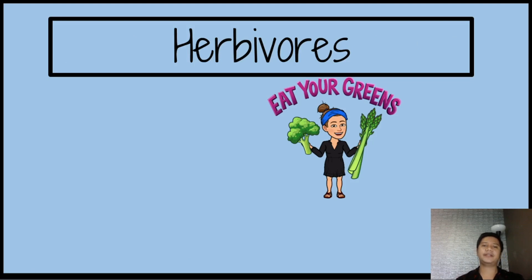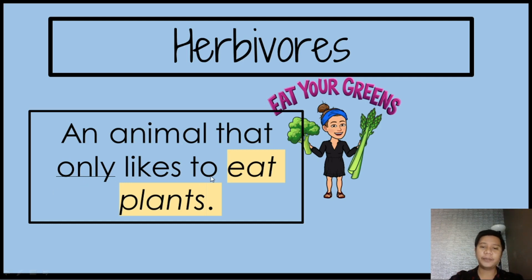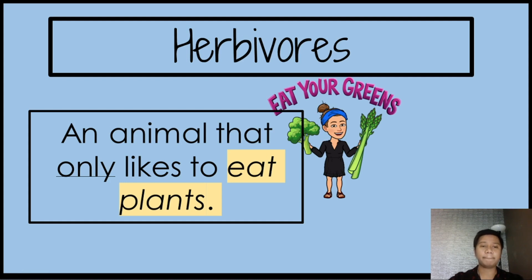The first classification of animals is what we call herbivores. So what is a herbivore? A herbivore is an animal that only likes to eat plants. Can you spell herbivore? H-E-R-B-I-V-O-R-E — herbivores.